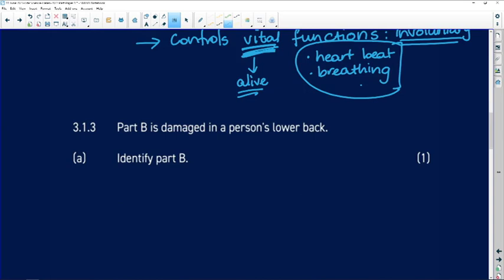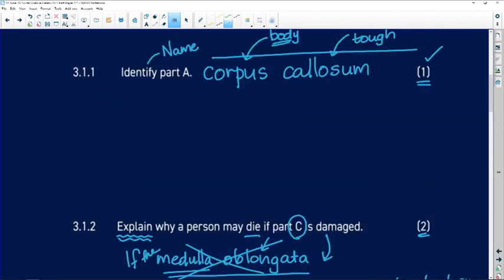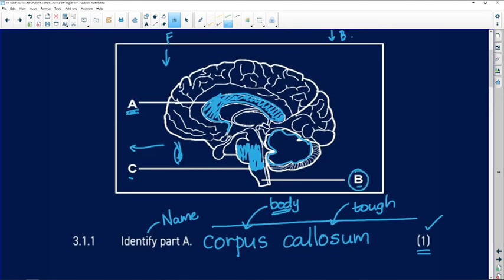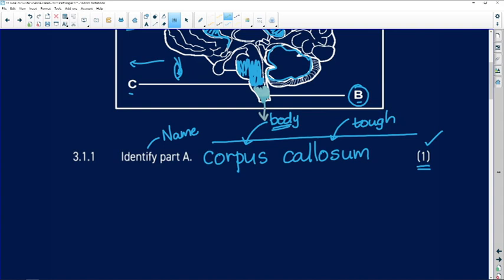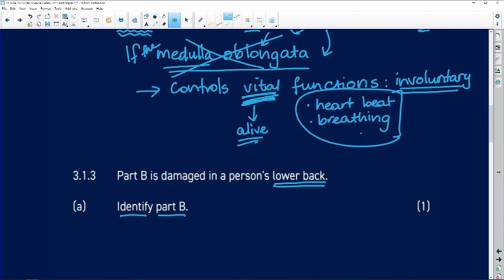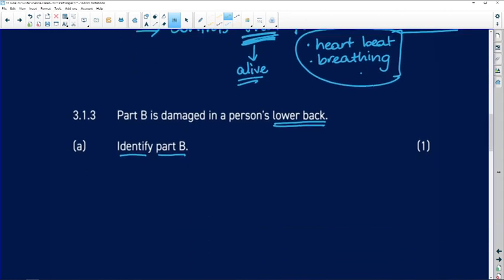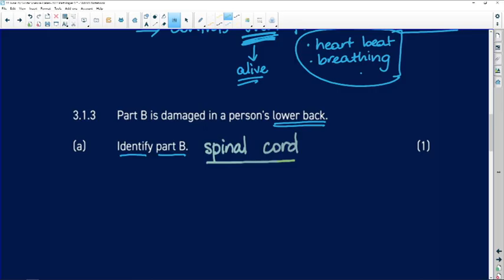Question 3.1.3: part B is damaged in a person's lower back. First of all we must identify part B. Go back to our diagram. What is part B? Part B is going to lie underneath or below the medulla oblongata and is going to go all the way down a person's back. So what is that structure? That is your spinal cord. Remember this is not your vertebral column, this is not your backbone. The words vertebral column apply to the bony structure that is protecting the spinal cord.